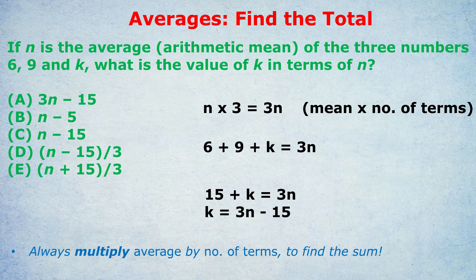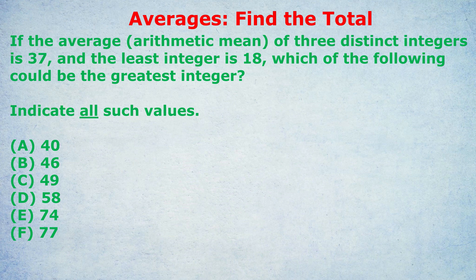So let's apply this new idea, this new philosophy to one more question that I've got coming up. This one I prepared earlier. Again, it's an official question. If the average (arithmetic mean) of three distinct integers is 37, and the least integer is 18, which of the following could be the greatest integer? Indicate all such values. Now, this is a harder question. So feel free to pause the video and try yourself. It's not an easy one. Even with my amazing trick, it's still fairly challenging towards the end. So try your best, or just wait to see my explanation. What's our first step? You probably guessed it. We're going to multiply the average by the number of terms to find the total. The average is 37, and the number of terms or the number of numbers is 3. 37 times 3 is 111.